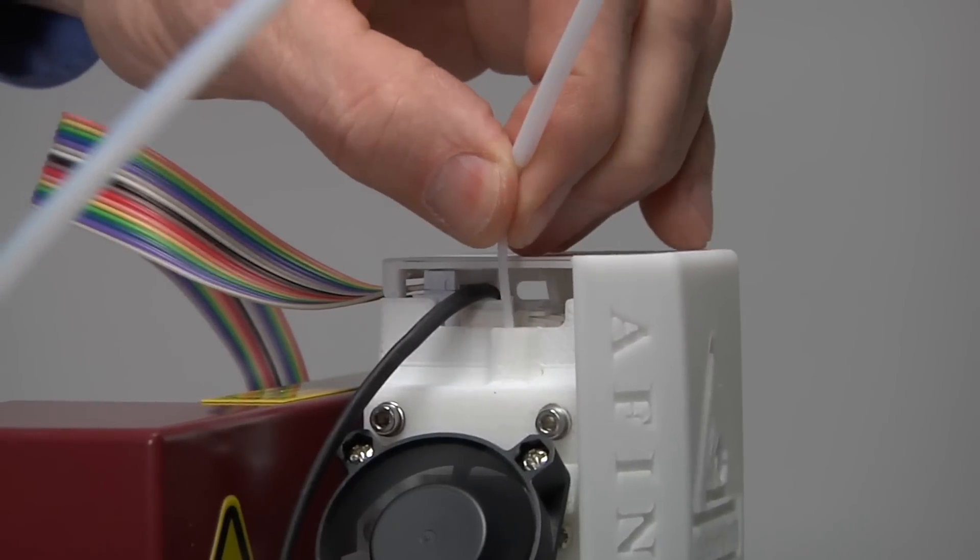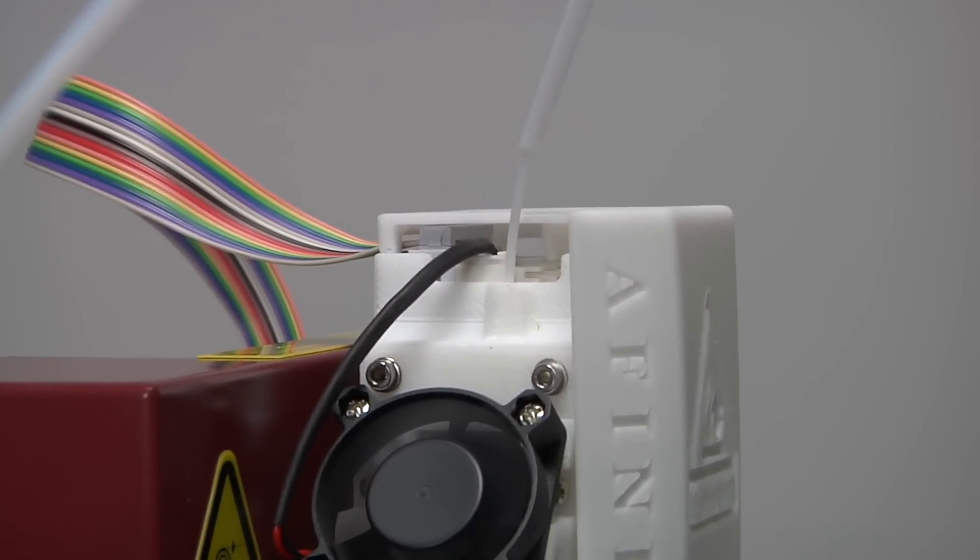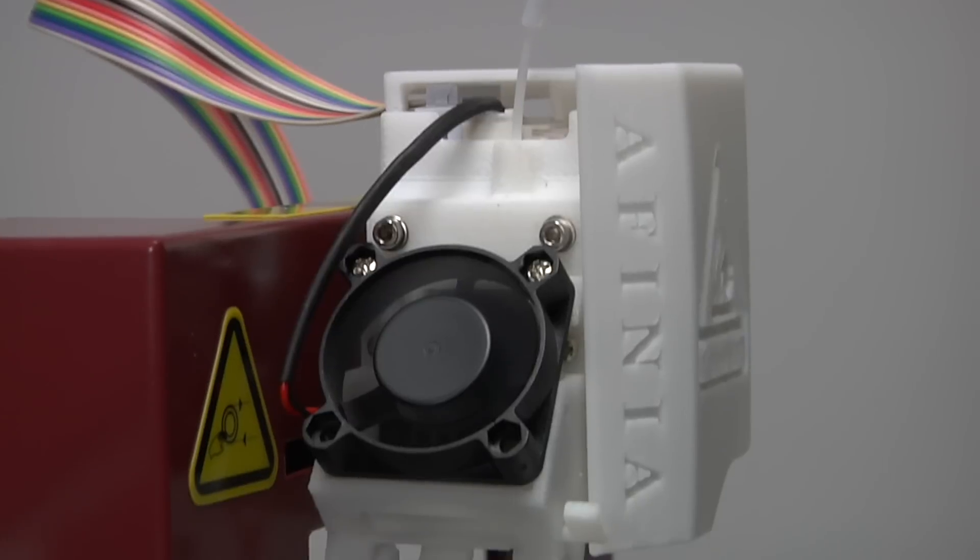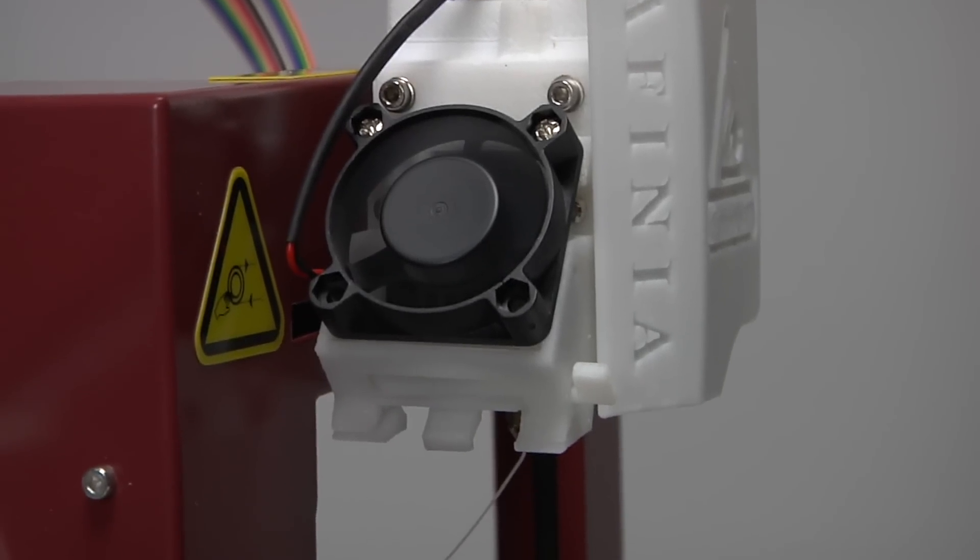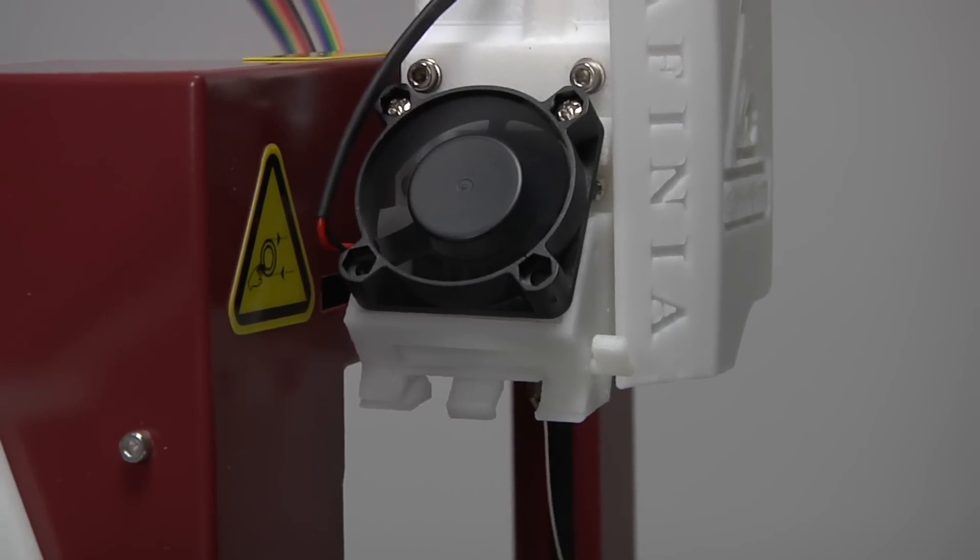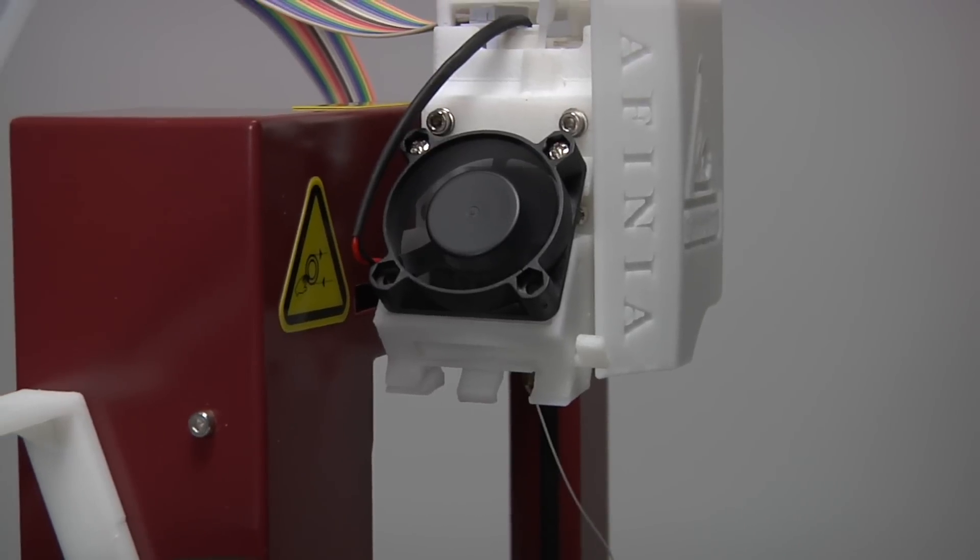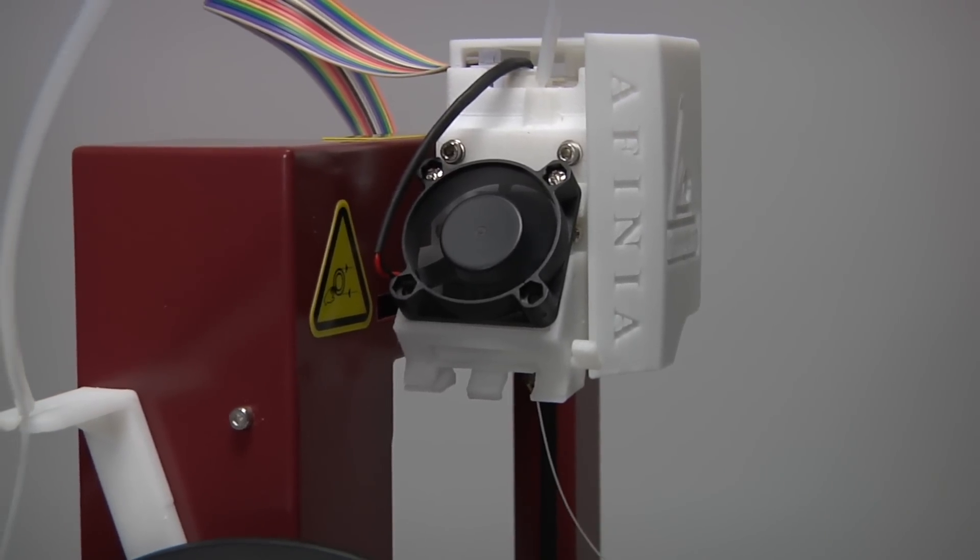Once the nozzle is heated, push the filament a bit farther into the hole at the top of the extruder head and hold it there with gentle pressure until the extruder motor starts pulling it through the extruder head. The extruder will release a thin strand of filament for a short period of time.